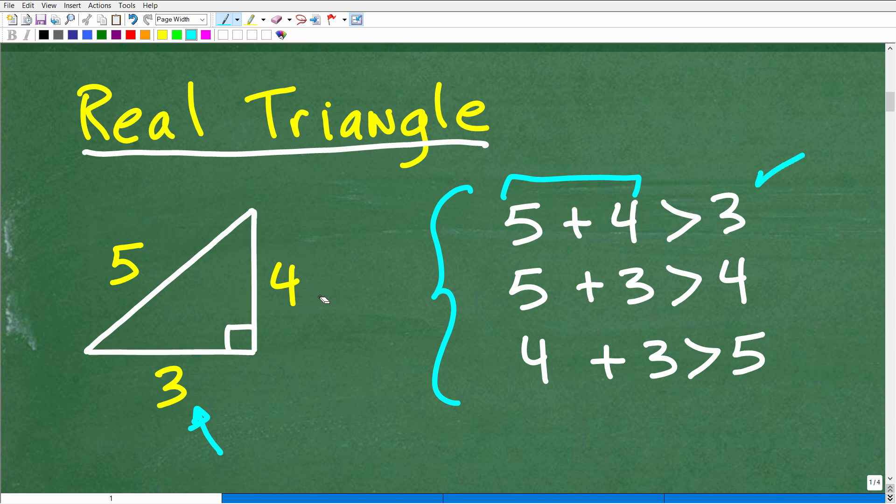Now what happens when we take another pair of sides like this side right here, five and three. And when we do this five plus three, that's eight. Well, that's going to be greater than that last remaining side right there. Okay, we're like, all right, well, let's check this last two pairs that we can kind of create. So three plus four is what? That's seven. And that's greater than that one side.